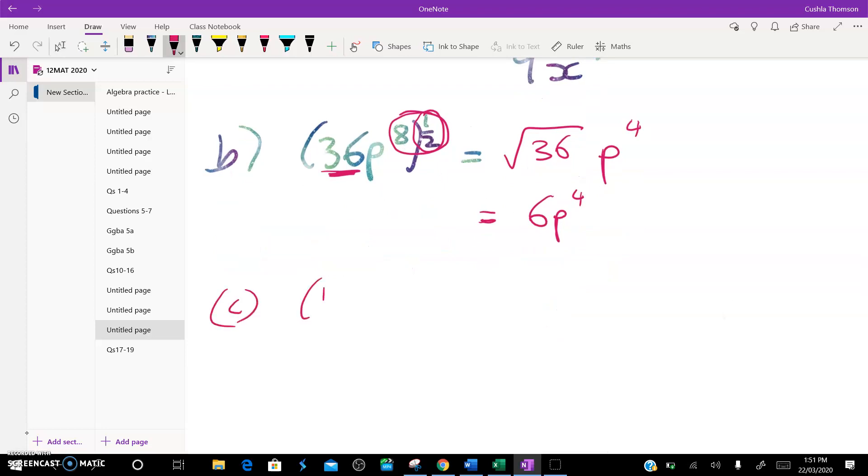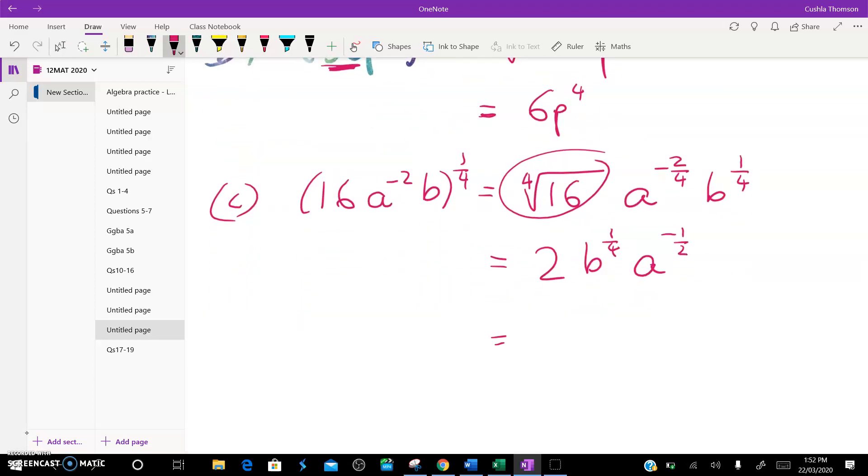Question C is 16a to the negative 2b all to the power of 1 quarter. So dealing with the 16 first means the fourth root of 16 times a to the negative 2 over 4 times b to the power of 1 quarter. The fourth root of 16 is the what times the what times the what times the what. So that's 2b to the power of 1 quarter, a to the negative half. Now I don't want to leave a negative power in my answer. I'm going to write that out like this. OK, so that's my final answer there.